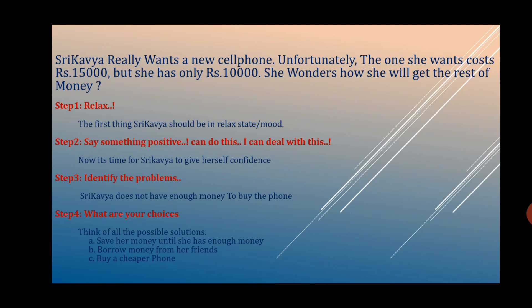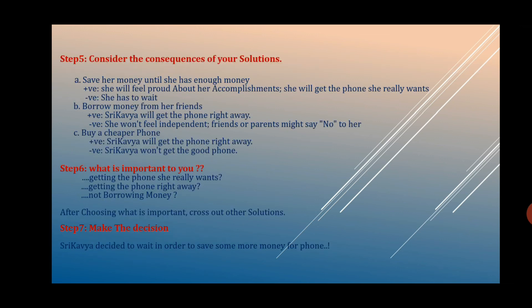Coming to choices — what are the choices she has? Think of all the possible solutions: save her money until she has enough, borrow money from her friends, or buy a cheaper phone. Then, coming to the fifth step: consider the consequences of your solutions.